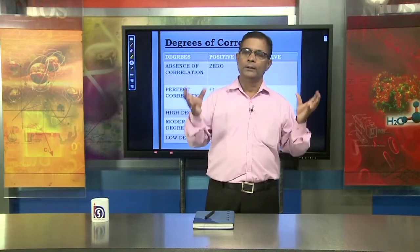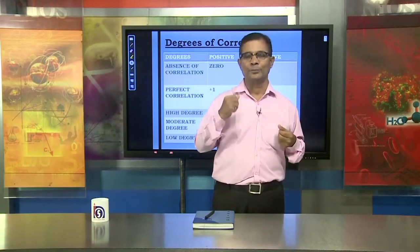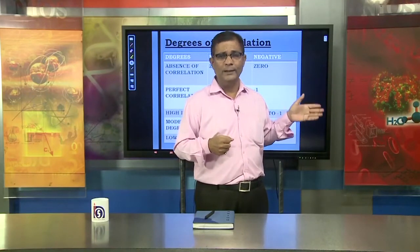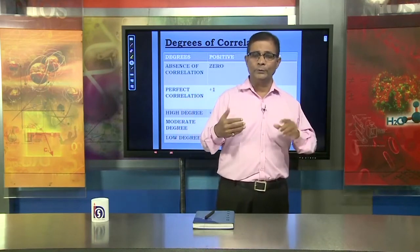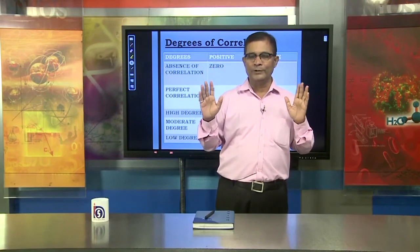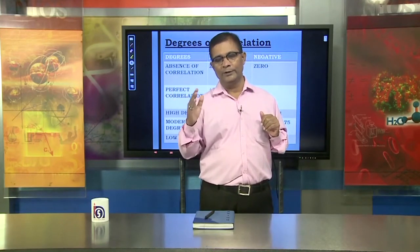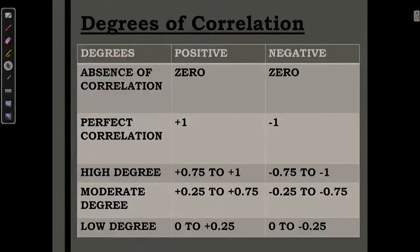It all depends upon the calculation. When you compute mathematically and put in the values, this result will come to you. So it is important to understand in advance: if the value is one, it is perfect correlation; between 0.75 and 1 is high degree; between 0.25 and 0.75 is moderate; below 0.25 is low degree; and if 0 comes, then there is no correlation at all. So you have learned 5 degrees of correlation.